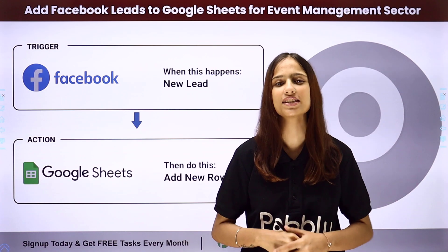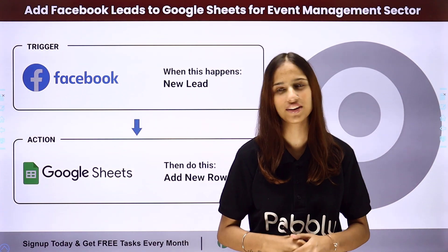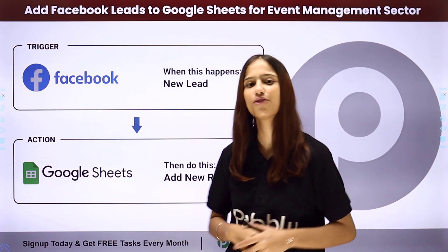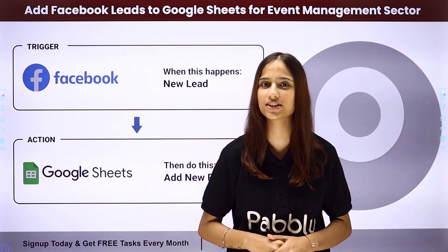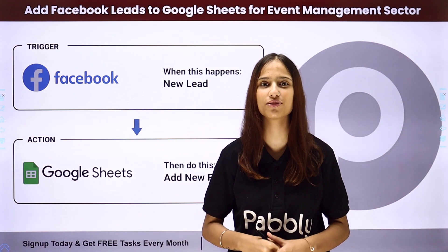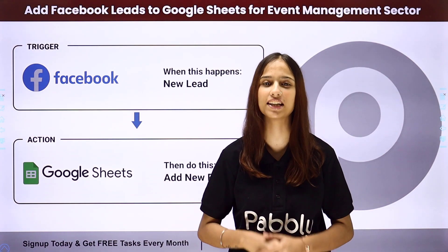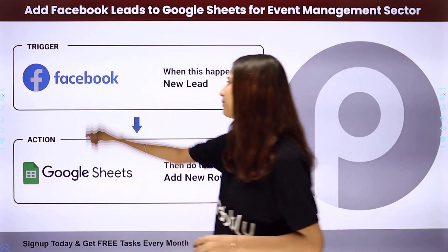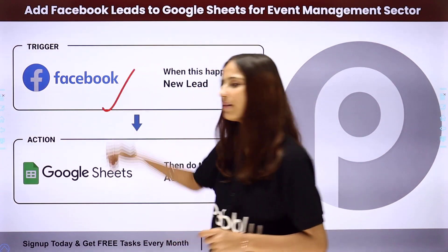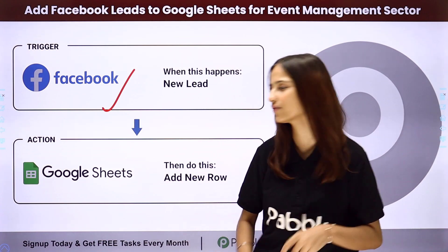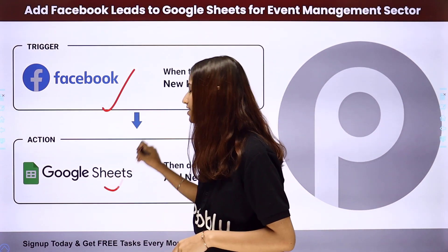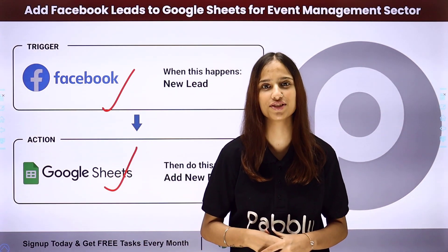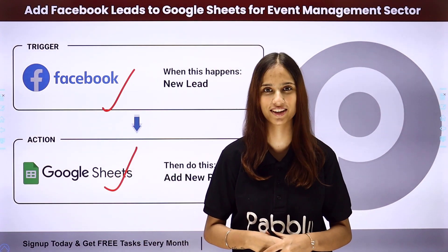To do this I need to build an integration between these two applications, for which I will be using this amazing integration and automation software — Pabbly Connect. My trigger application will be Facebook and my action application will be Google Sheets. To learn more about this integration, follow me through the screen.